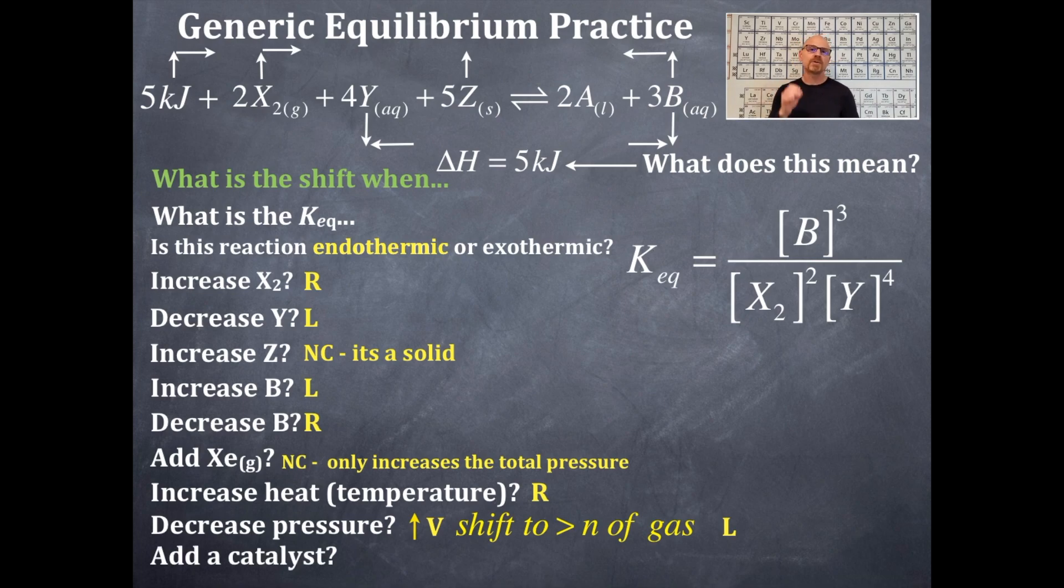What happens if you were to add a catalyst? In chemistry, catalysts are nonspecific. They increase both the forward and the reverse rate. They just make the reaction happen faster, but they don't cause a shift either right or left. So there is no change.